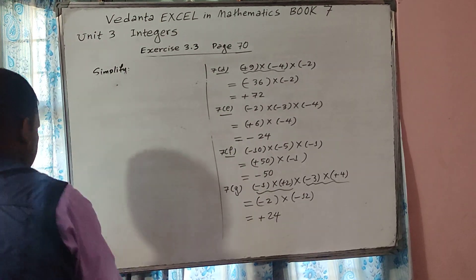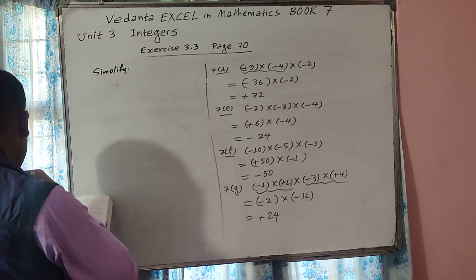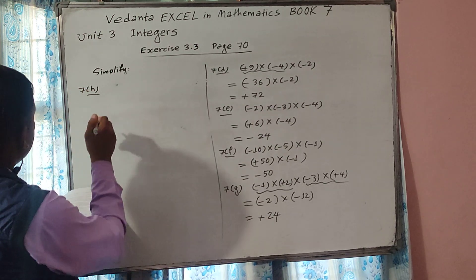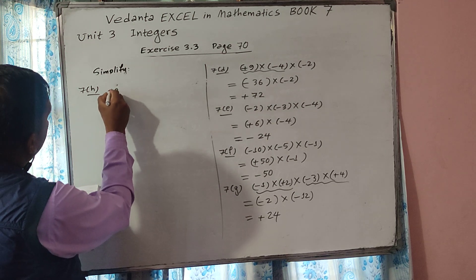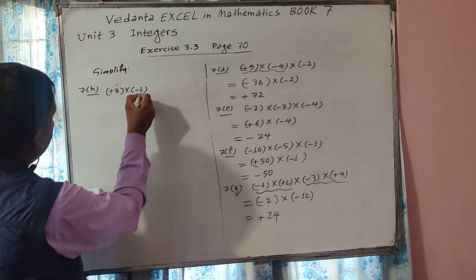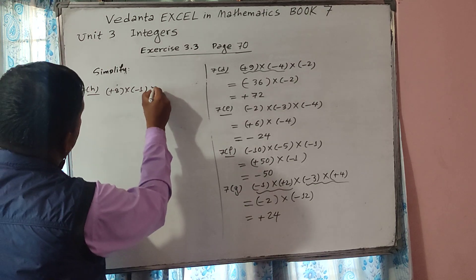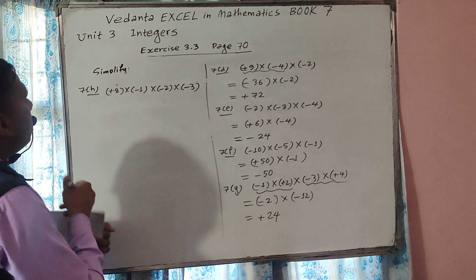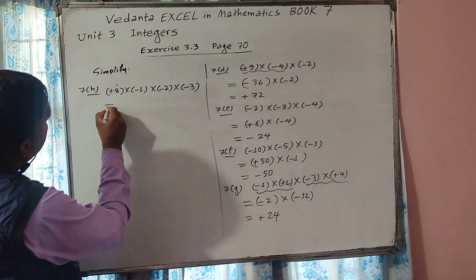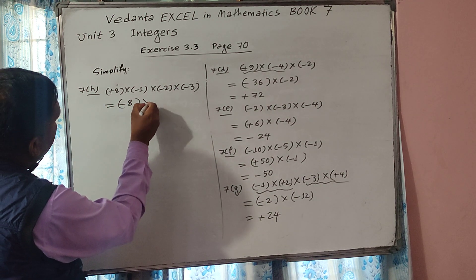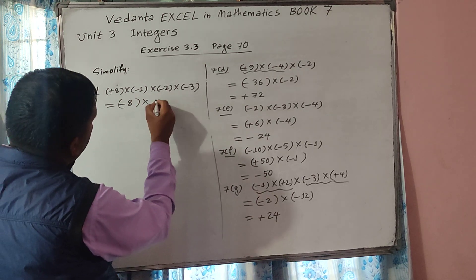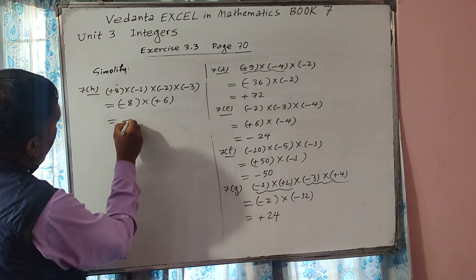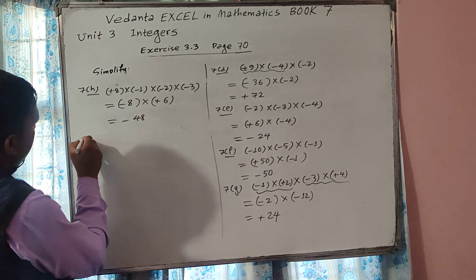Now 7H: plus 8 into minus 4 into minus 2 into minus 3. Look at the first two numbers — plus into minus gives minus 8 times 4, which is 8. Then in the last two numbers — minus into minus gives plus 2 times 3 is 6. Then minus into plus gives minus, so 8 times 6 is 48. Minus 48 is the answer.